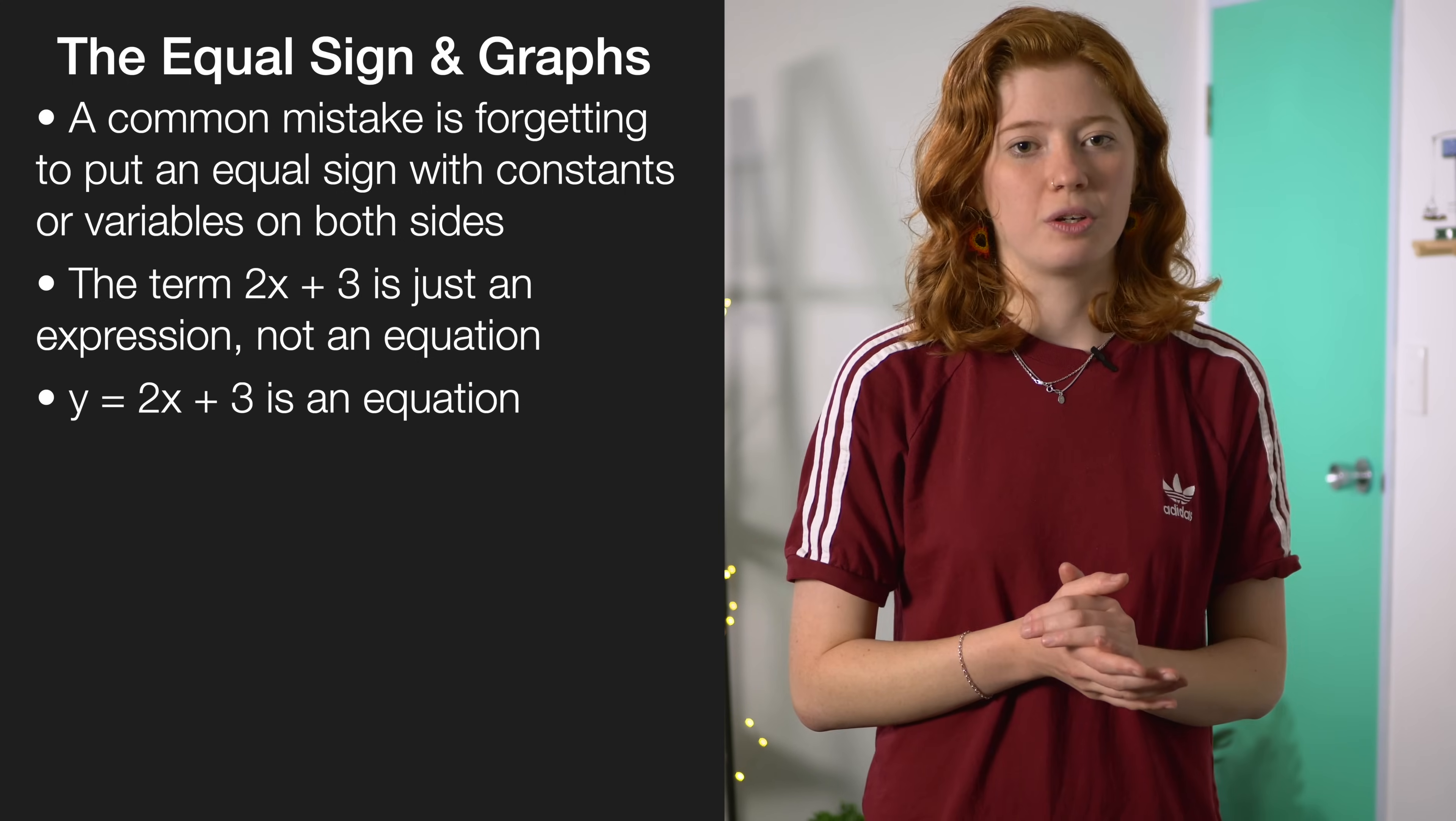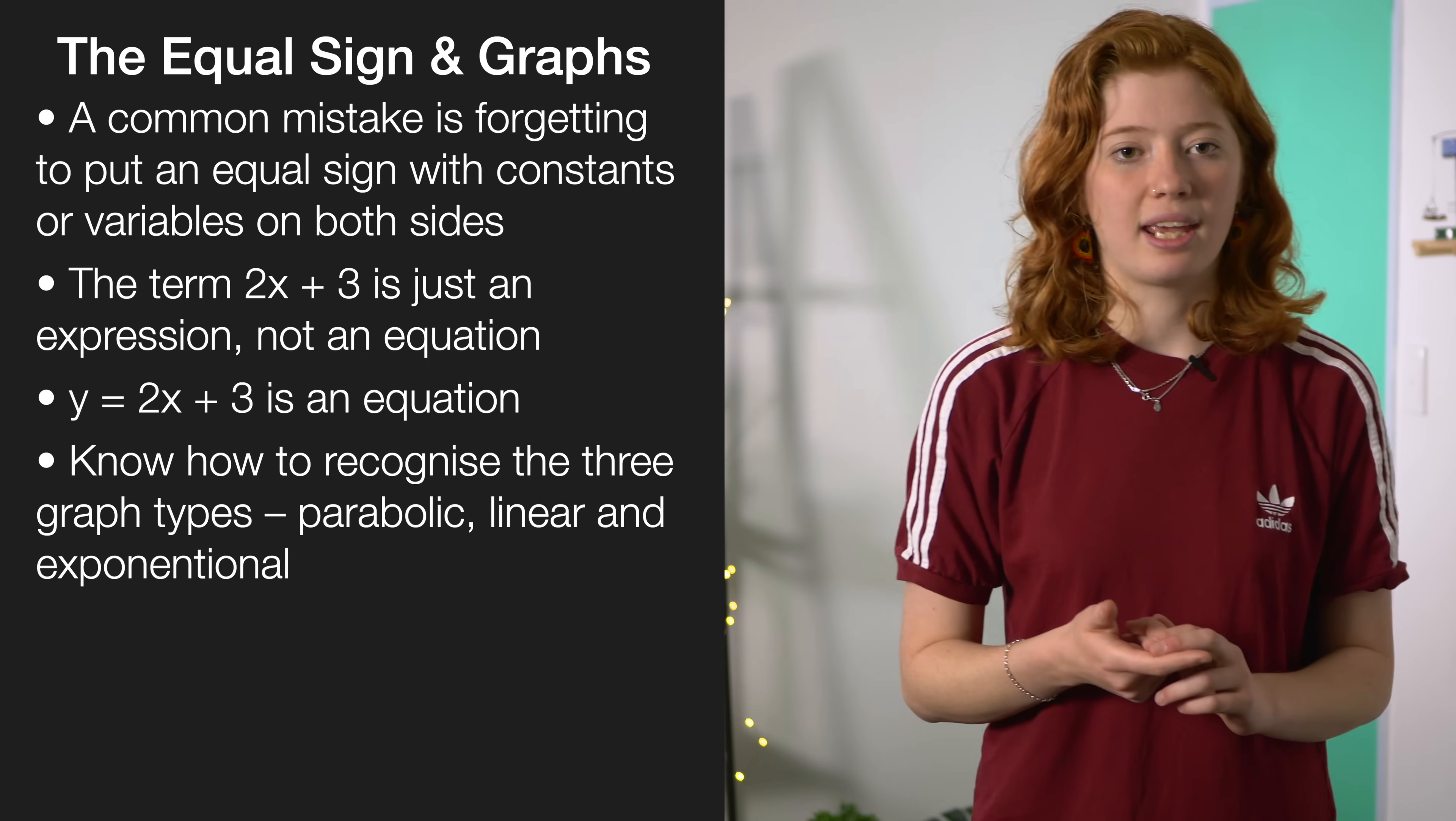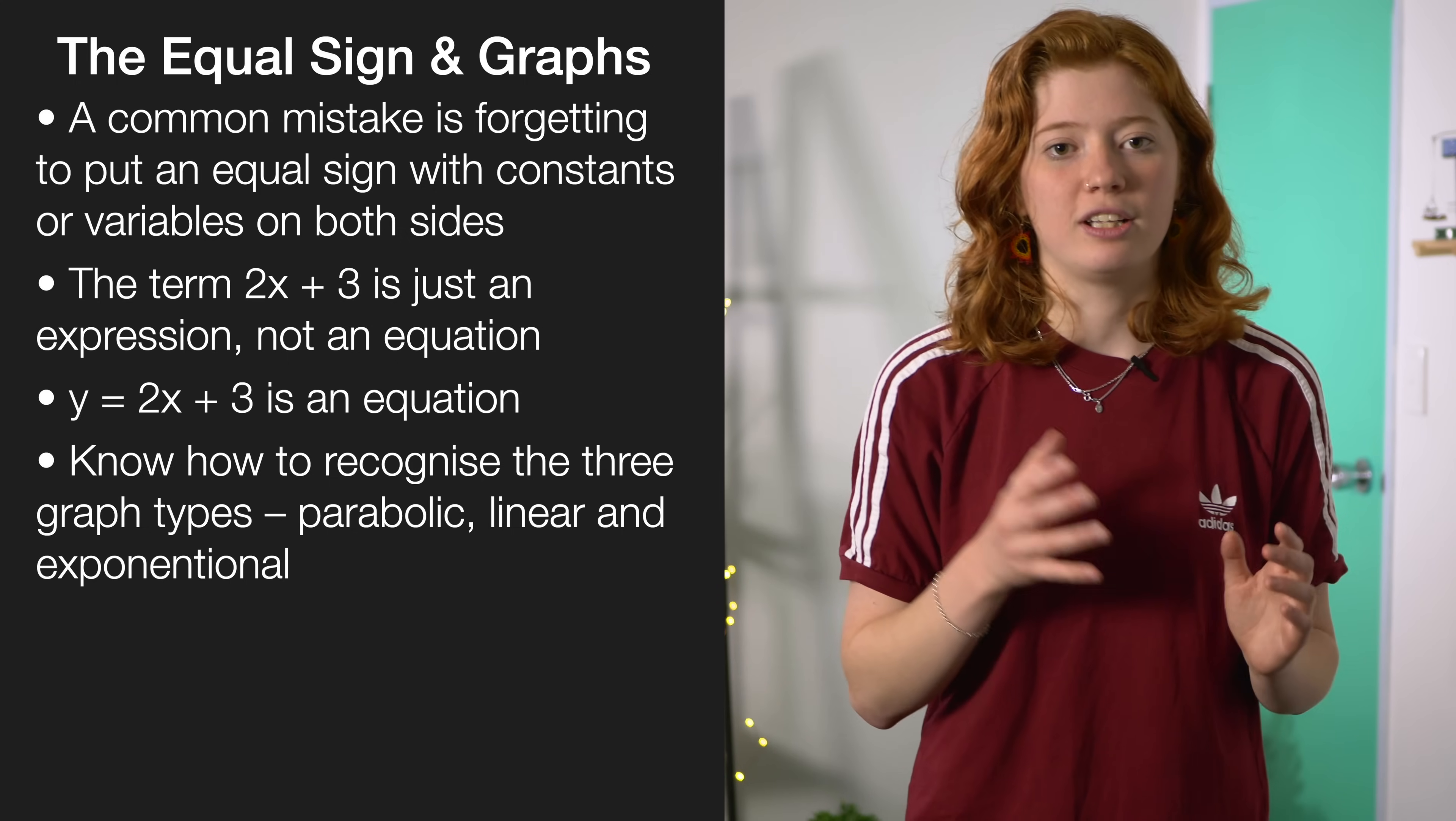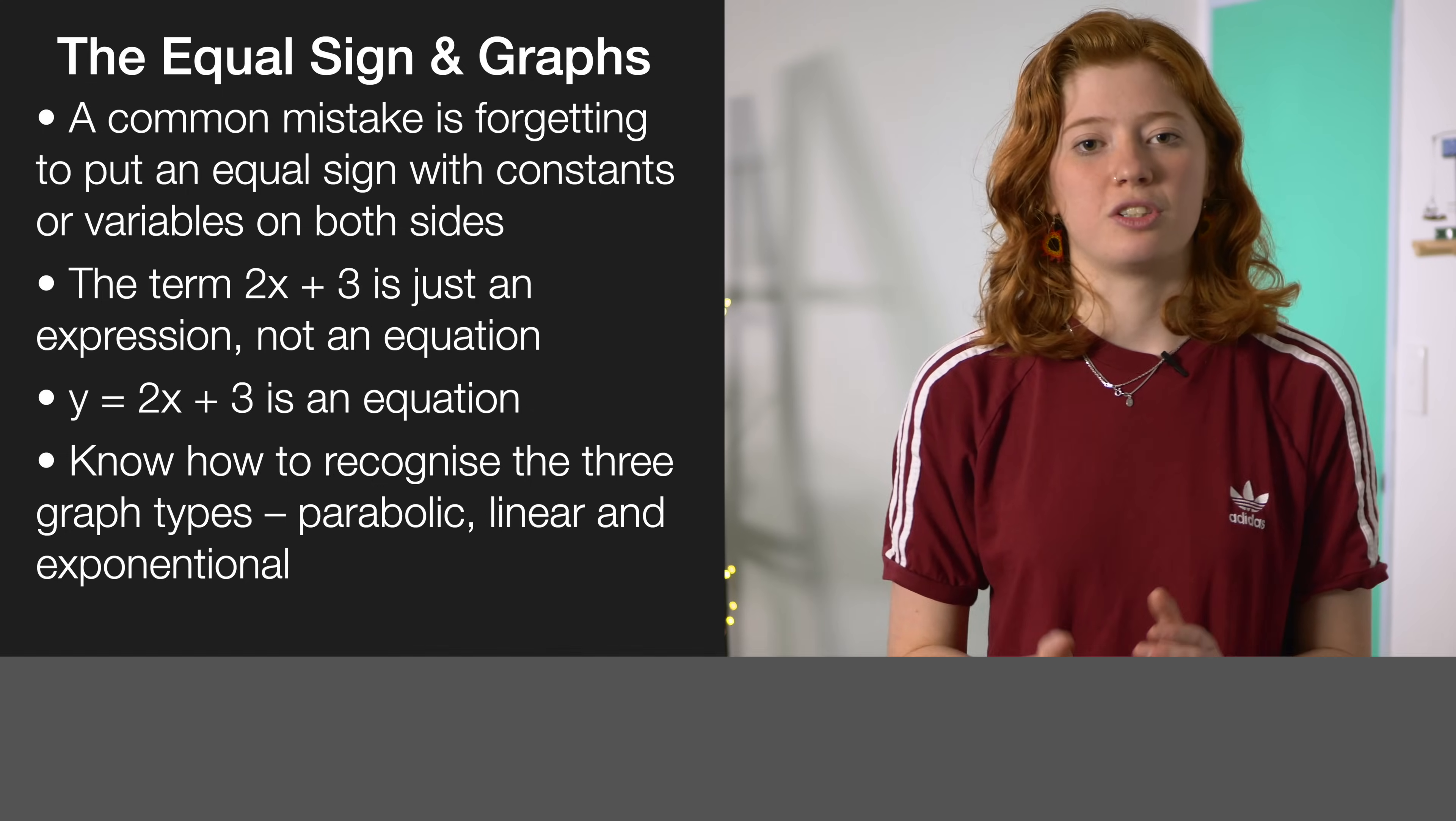Another important skill to get used to is being able to classify a graph into its type based on what it looks like. Make sure to get really used to knowing what an exponential, linear or parabolic graph looks like. Use a tool like graphsketch.com in order to practice drawing and recognizing these graphs. Another really important part of this is recognizing that graphs can look different in different situations. For example a parabolic graph can be concave or convex depending on whether it's positive or negative. This difference is really important to know.